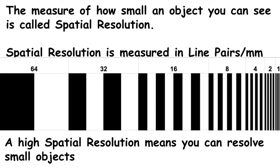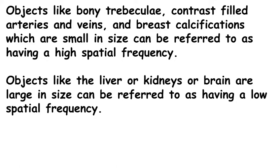The measure of how small an object we can show is called spatial resolution. To resolve an object, we need to see the object and then see the background — an area where the object is not present. For that, we use line pairs: a line and then a space equal in width to the line. As the line pairs get smaller, we can fit more of them into a millimeter. Spatial resolution is measured in line pairs per millimeter, and high spatial resolution means you can resolve very small objects. Objects like bony trabecula, contrast-filled arteries and veins, and breast microcalcifications are small and have a high spatial frequency, while large objects like the liver, kidneys, or brain have a low spatial frequency.